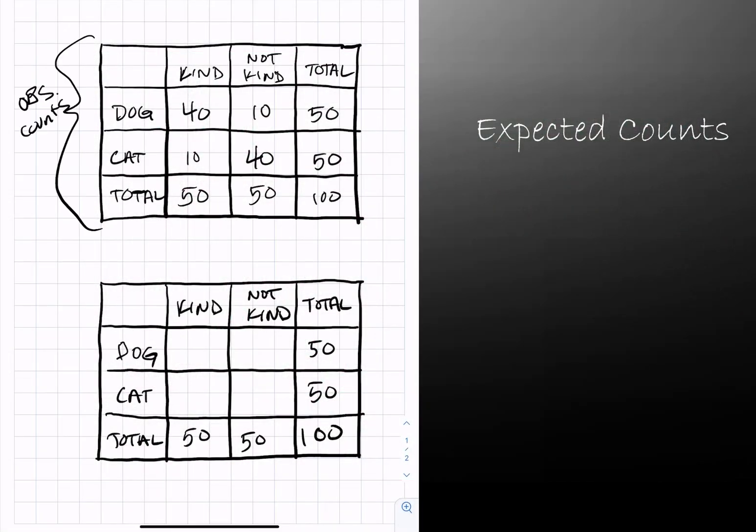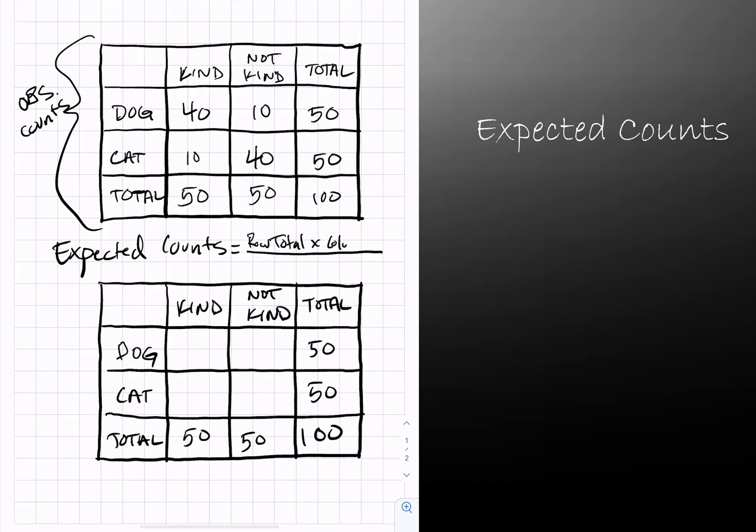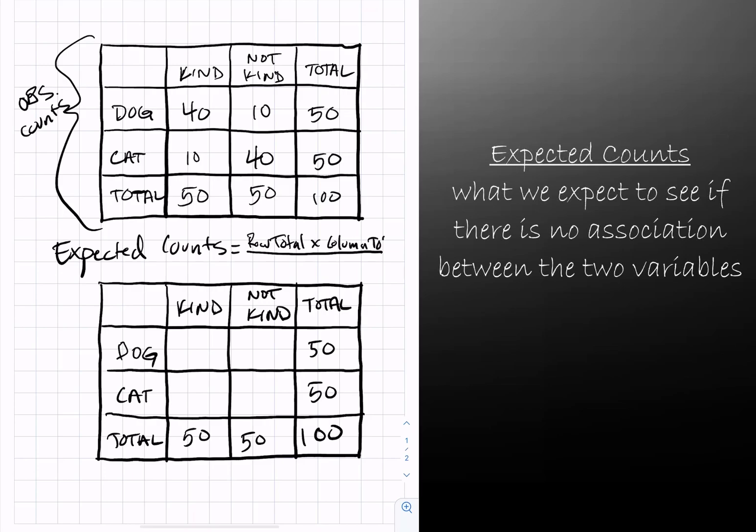Welcome back, thank you for clicking on today's video. Today we're going to be talking about expected counts. What you see here is a table that already has observed counts, and when we calculate the expected counts, it's what we expect to see if there's no association between the two variables. To find them, you take the row total times the column total and then divide by the grand total.